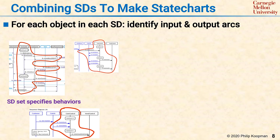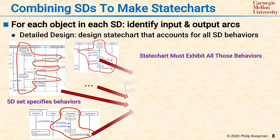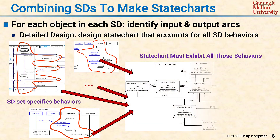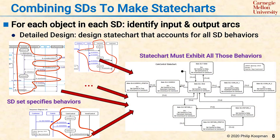What this really means is you have a number of partial descriptions of object behavior, and whatever state chart exists has to account for all those interactions. From that, synthesize a state chart that has the ability to perform all the interactions.